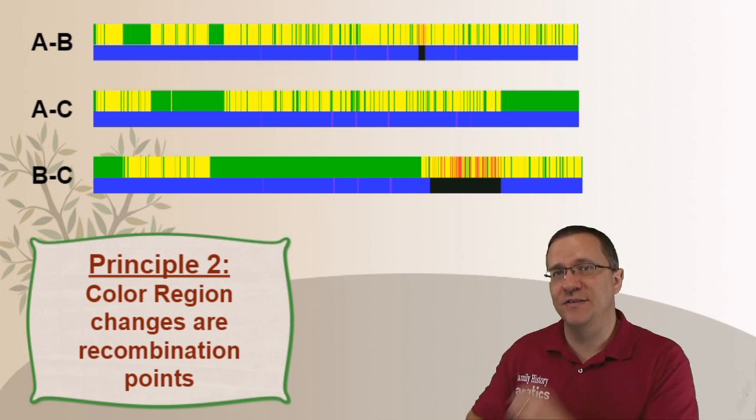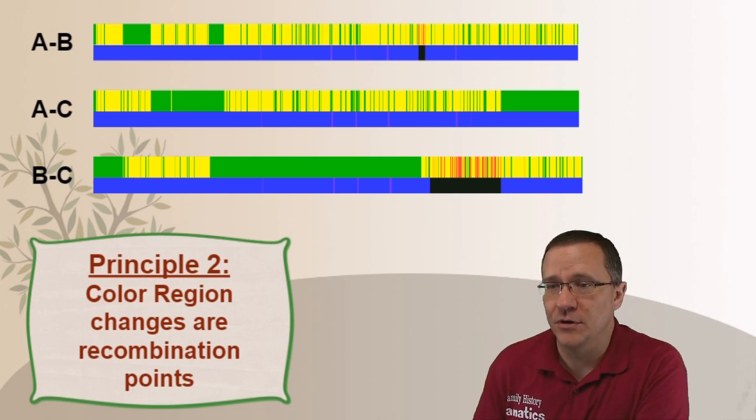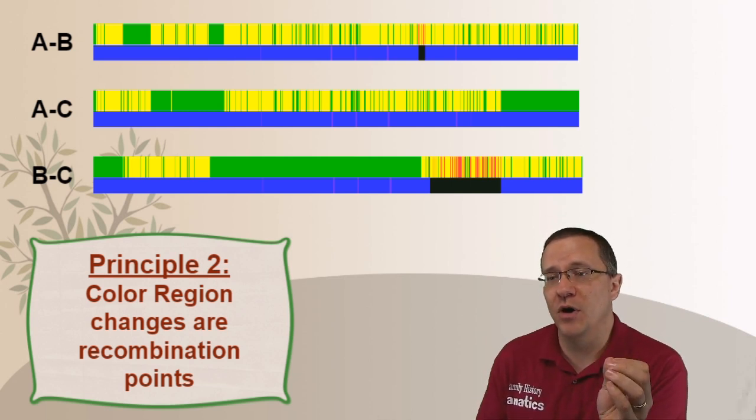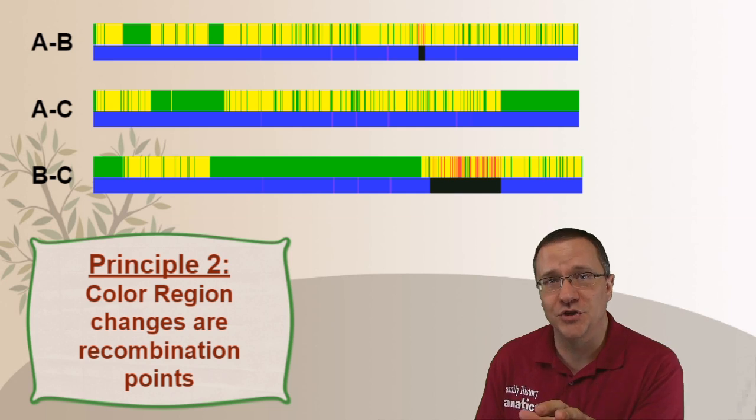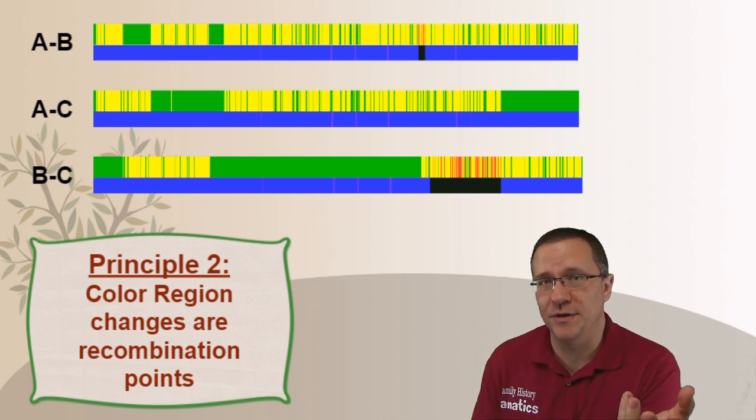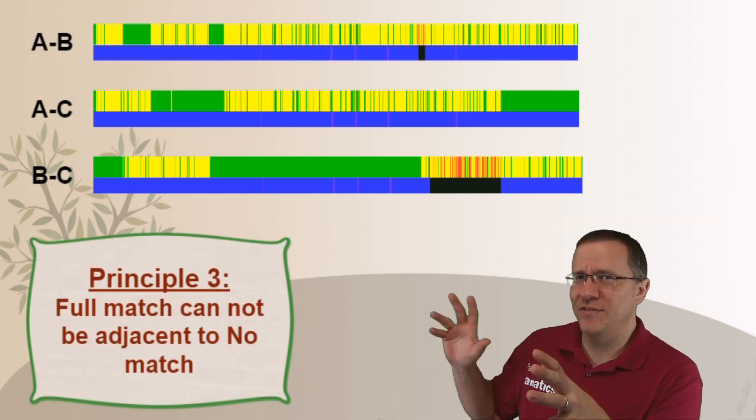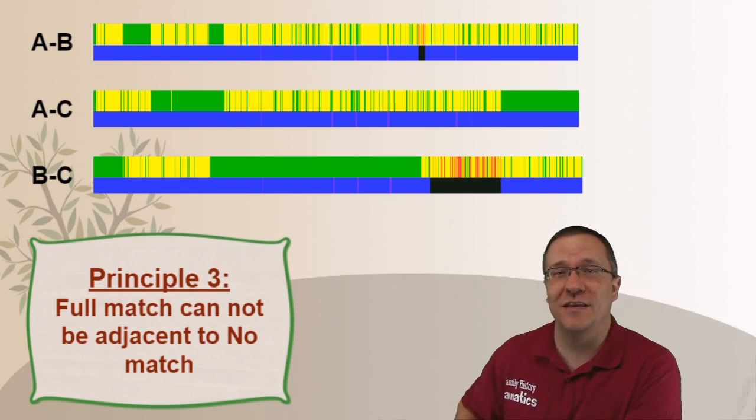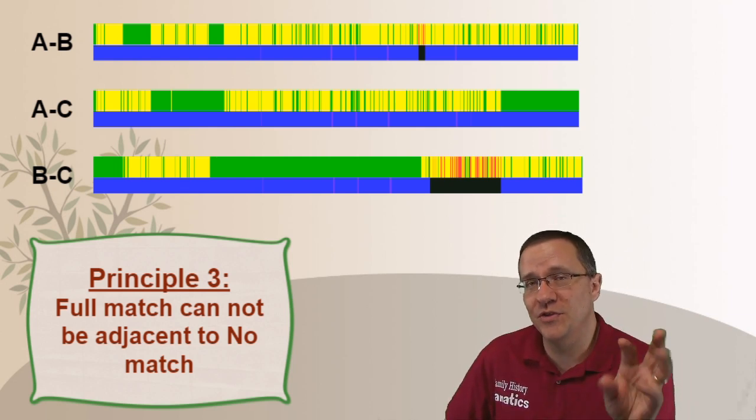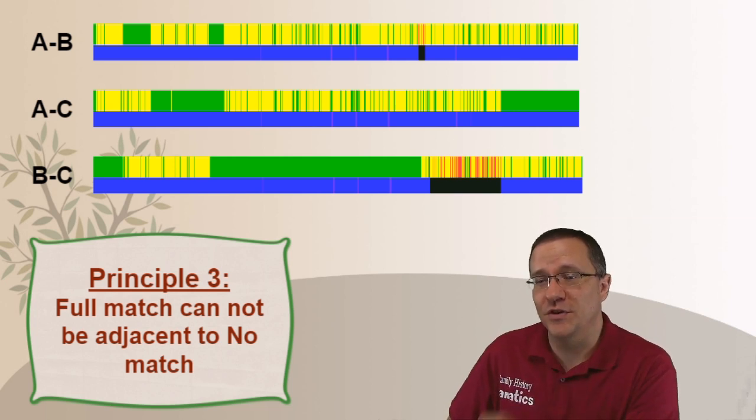When we're looking at these three graphs here, every time we go from a color region one to a color region two that's a recombination point, or vice versa. Now the next principle, and I know it's looking like we really haven't gotten very far because I haven't drawn anything on here at all. All I have is these graphs up here. But these other principles are important to understand before you start drawing so you can start to keep things straight.